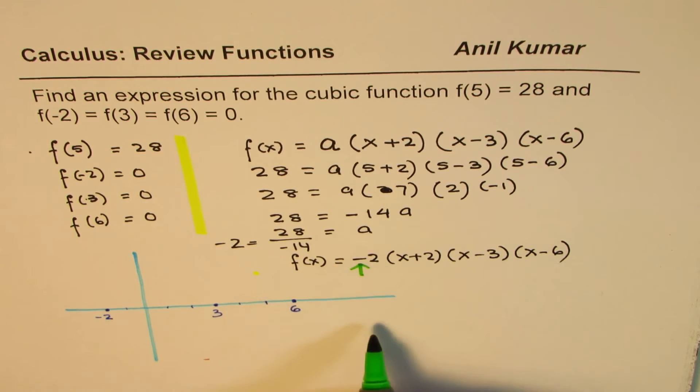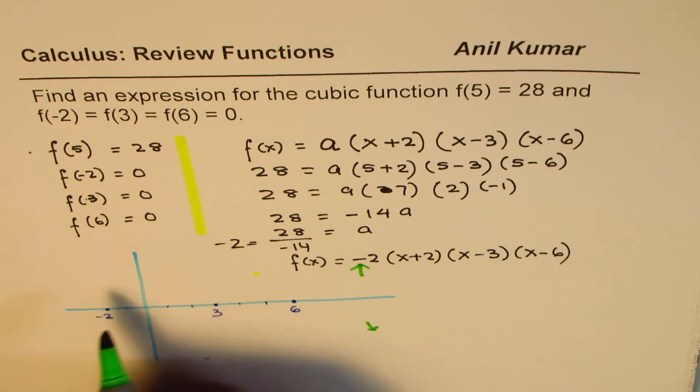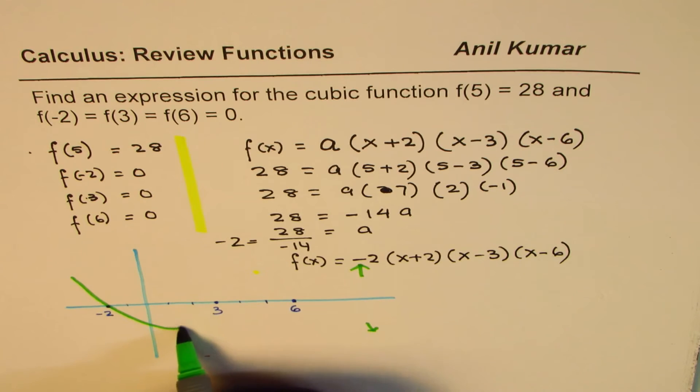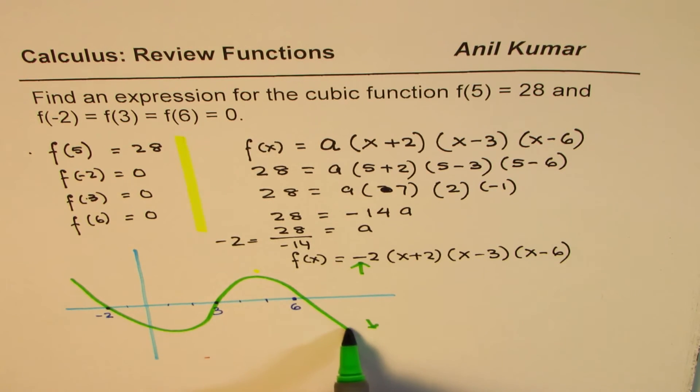The second way is to look into this leading coefficient, which is negative. If it is negative, that means right side is down. So right side is down also makes sense. And the odd means opposite ends. So therefore, we should actually sketch this function in this order.